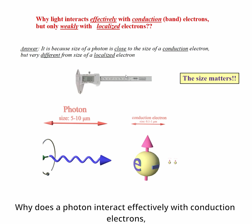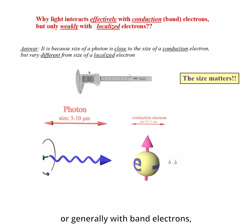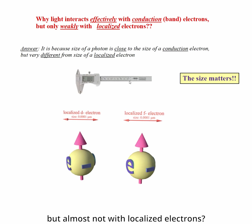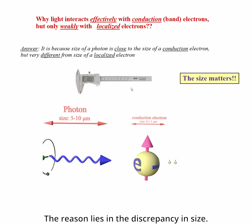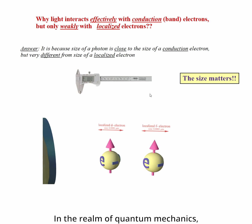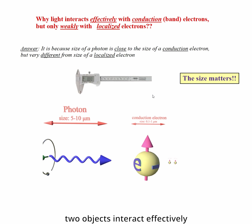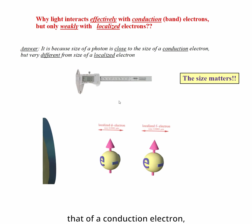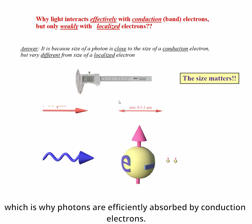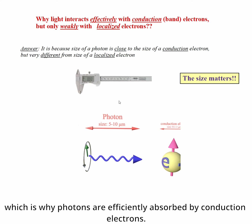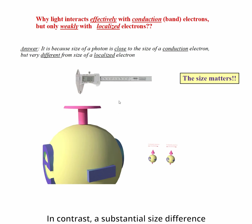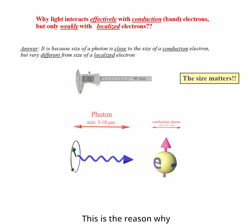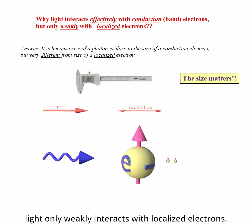Why does a photon interact effectively with conduction electrons, or generally with band electrons, but almost not with localized electrons? The reason lies in the discrepancy in size. In quantum mechanics, two objects interact effectively when they share approximately the same size. The size of a photon closely matches that of a conduction electron, which is why photons are effectively absorbed by conduction electrons. In contrast, a substantial size difference exists between a photon and a localized electron, which is why light only weakly interacts with localized electrons.